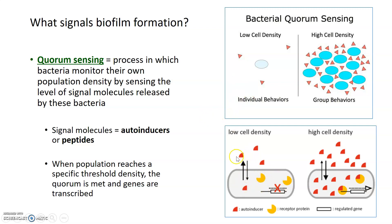At low cell density, there are few signal molecules — most of the time these are small peptides, also known as autoinducers. When there are only one or two cells, there aren't many signaling molecules. However, once there are many cells, there are many signaling molecules in the environment, the quorum threshold is met, and autoinducers can trigger transcription of related genes in response to that quorum sensing behavior. In this way, once a high cell density quorum is met, a biofilm can begin to form.